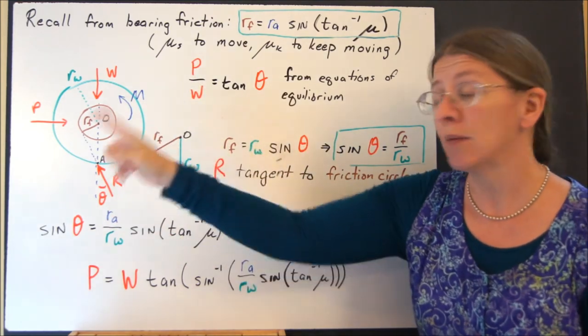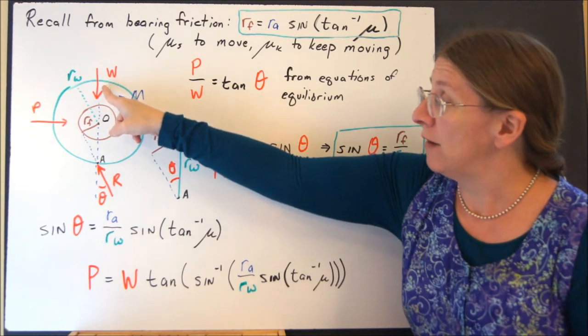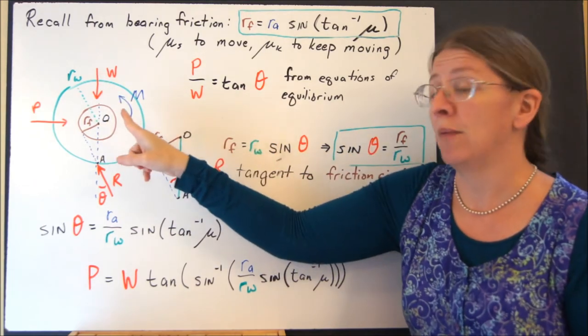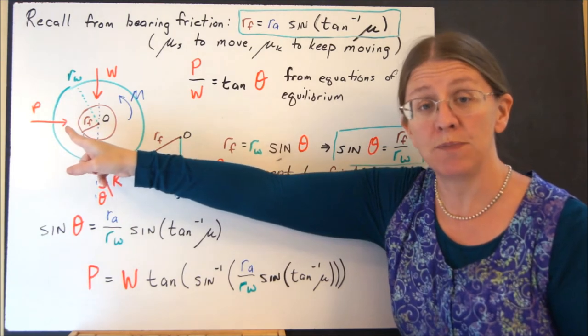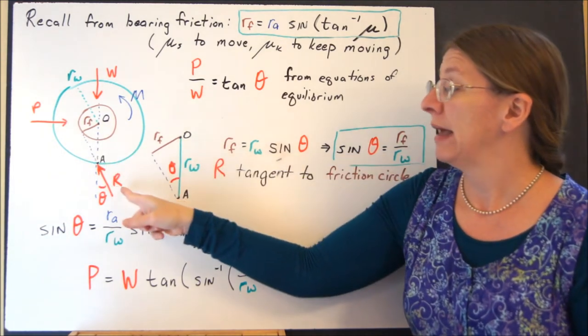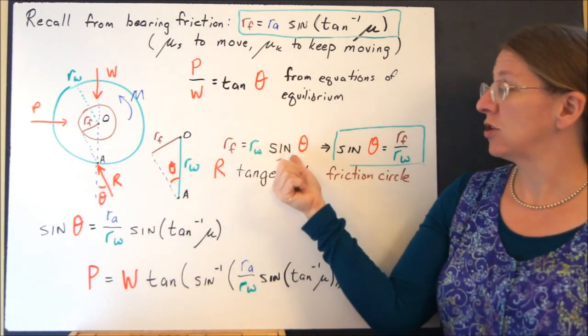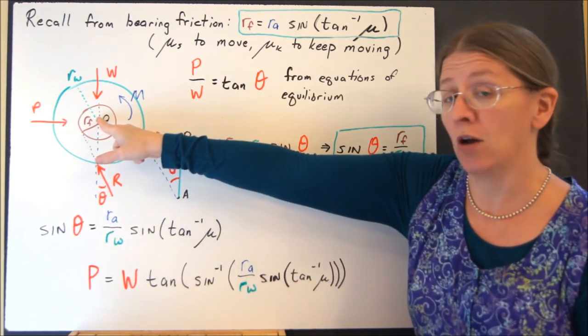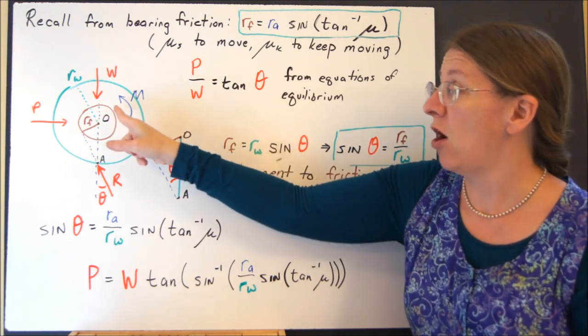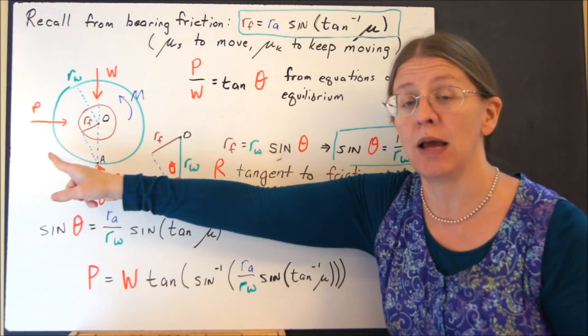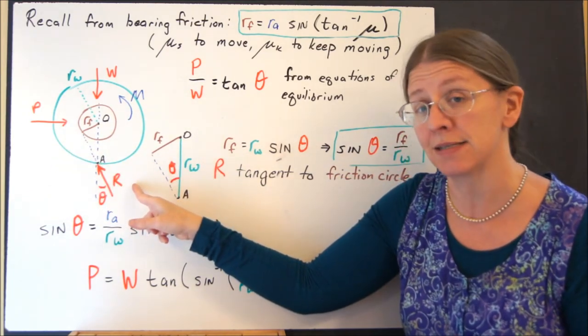Now what does the free body diagram look like with the friction circle on it? I have the W, radius of the wheel, the M from the axle friction. I have P as my force to keep or start it going. This is my R acting at an angle theta. If you sum the moments here at O, you can see that whatever this M is, all I'm going to have then is W, and W and P will cancel out.